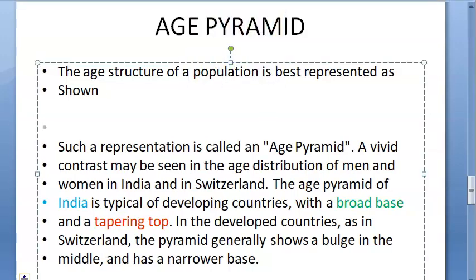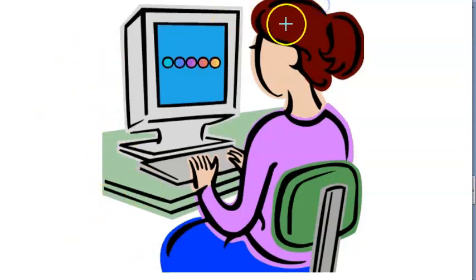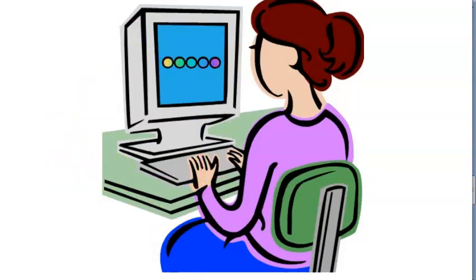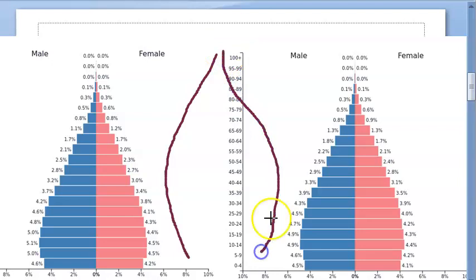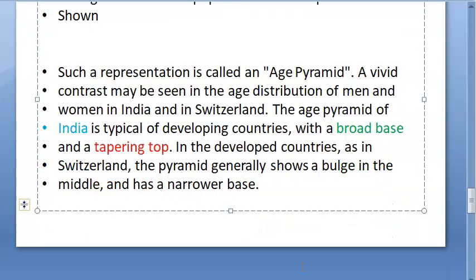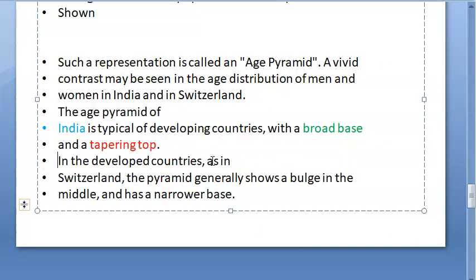If someone asks you to draw India's age pyramid in an exam, draw it with a broad base that tapers toward the top — something like a triangle. Don't forget the shape. In developed countries like Switzerland, the age pyramid shows a bulge in the middle and a narrow base — they have brought population growth under control.